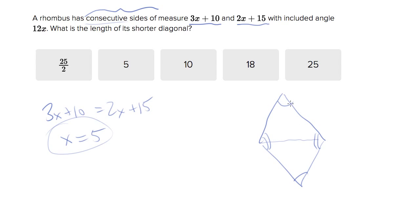So the rhombus has a short diagonal and a long diagonal. And they're telling you one of the angles is 12 times x, which in this case is 12 times 5, which is 60. So 60 degrees is one of the angles here, it must be the shorter angle.